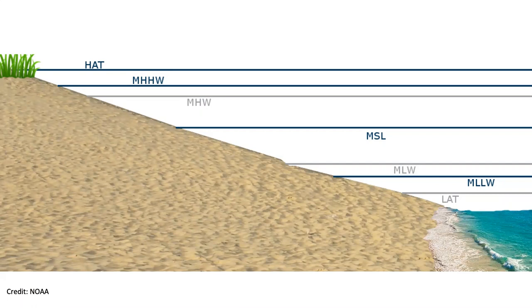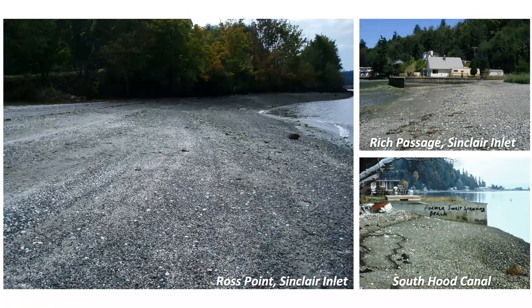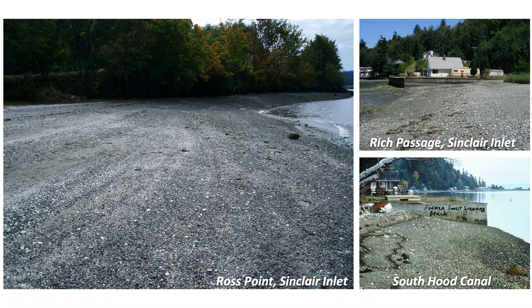Generally when we think of our Puget Sound beaches, we tend to think of something gently sloping with glacial materials — conditions that are biologically important for many species. Historically, people wanted deep water access to the shore, so armor was extended to deeper water, which could ultimately impact the shore both directly by covering up habitat and indirectly in ways we'll touch on as we go.